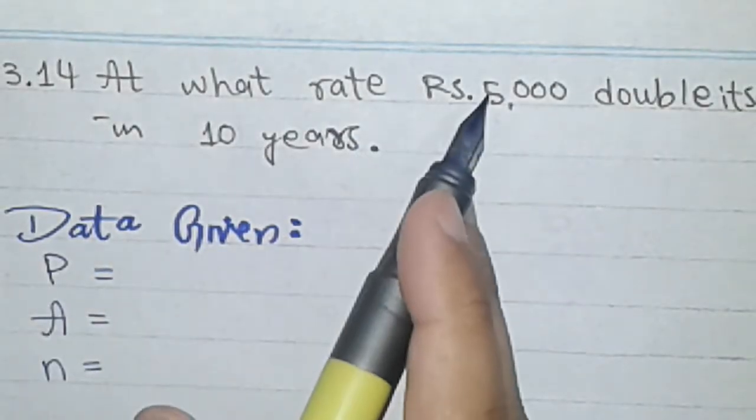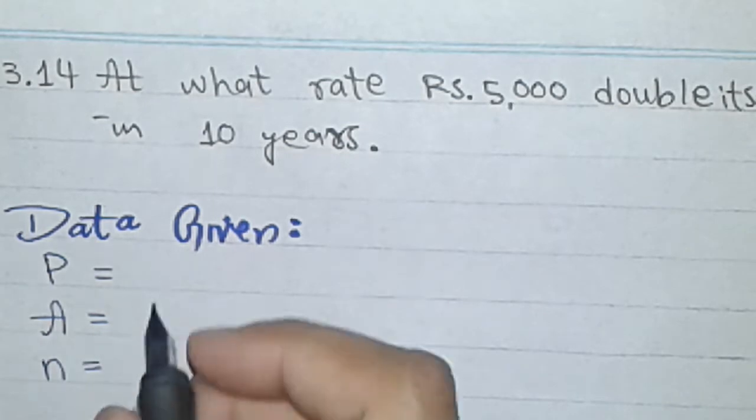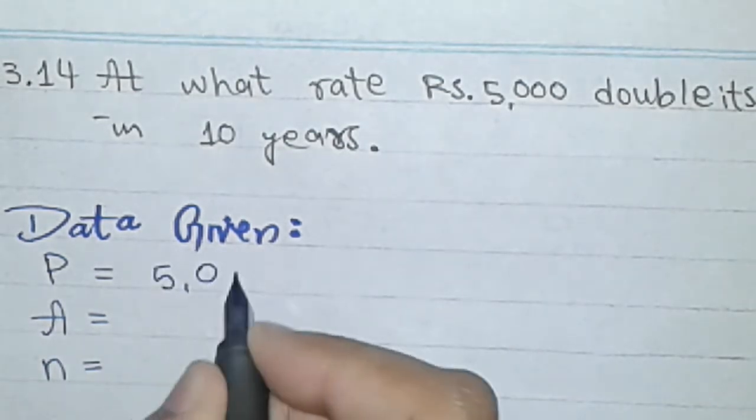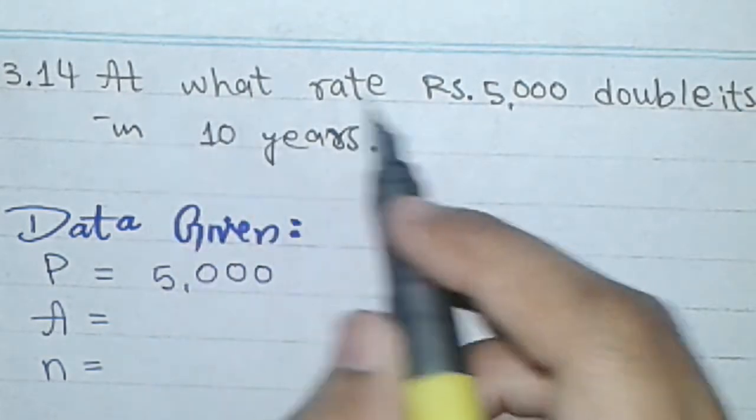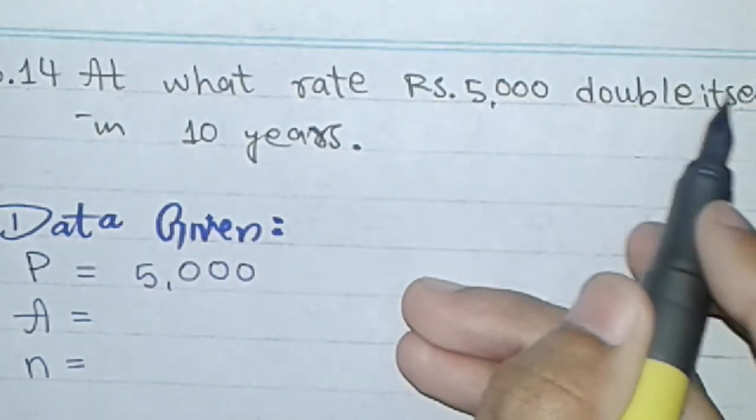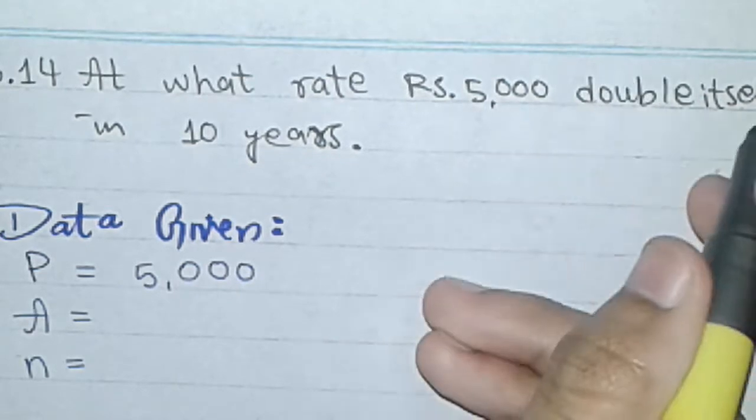So here is the 5,000, principal amount. At what rate Rs. 5,000 double itself?